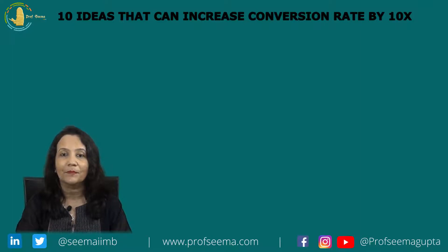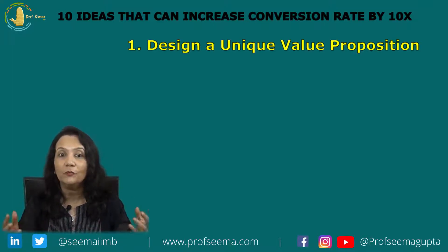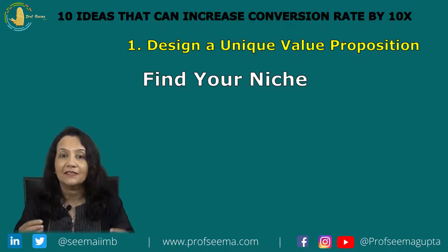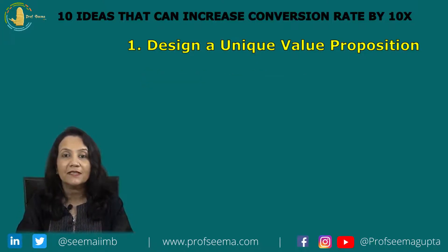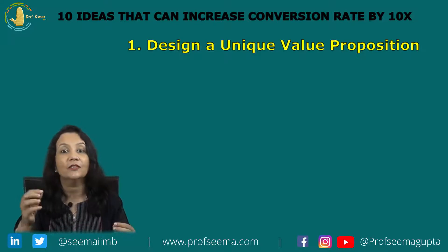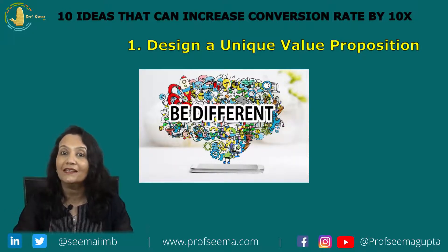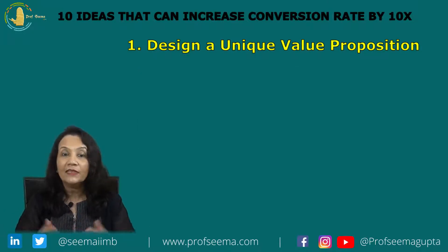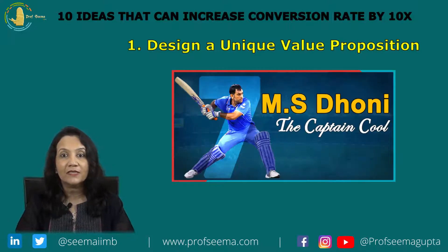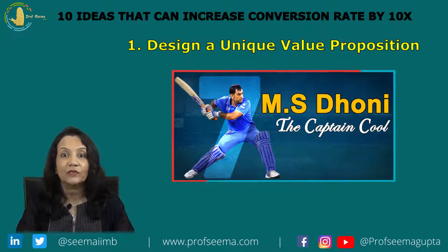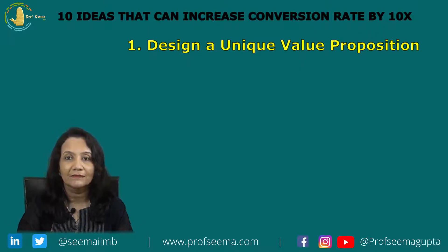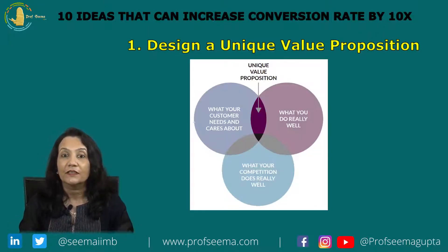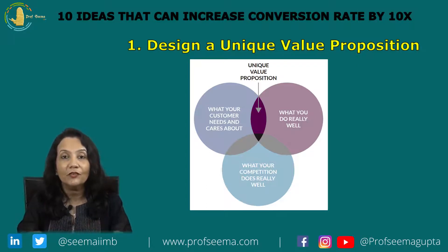Number one tip: design a unique value proposition. You must find your niche. Unique value proposition helps convey that one thing that you can serve that nobody else in the market can. Think of MS Dhoni — his USP is Captain Cool. He doesn't get stressed out in any situation. You can use the 3C Framework — Competence, Customer, Competition — to identify your USP.